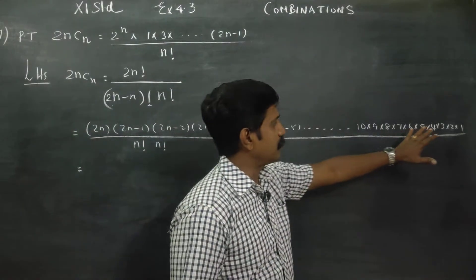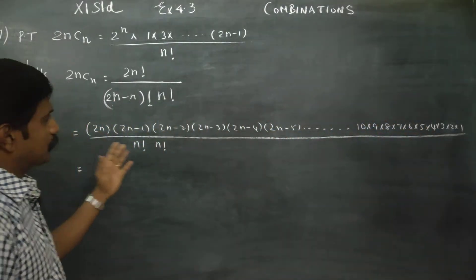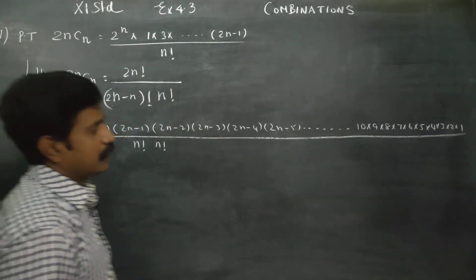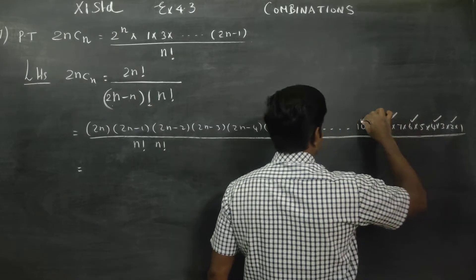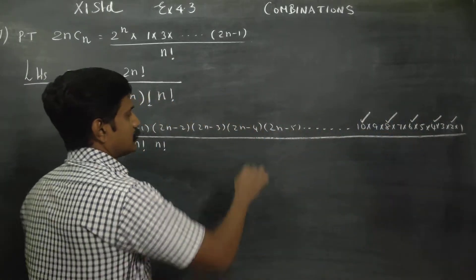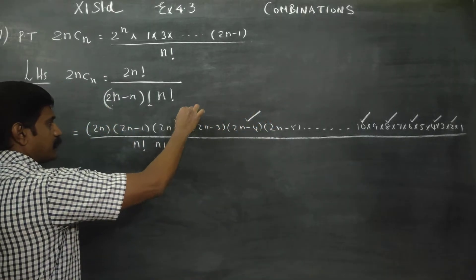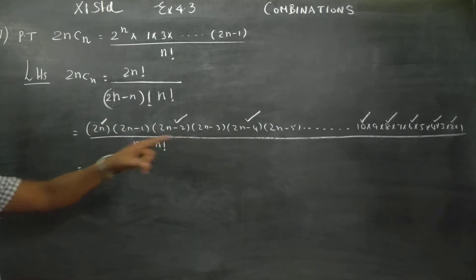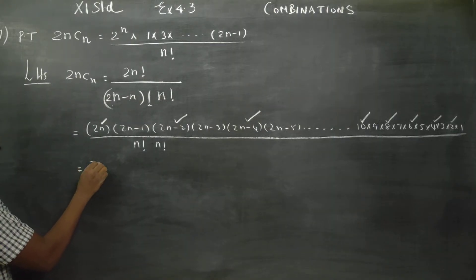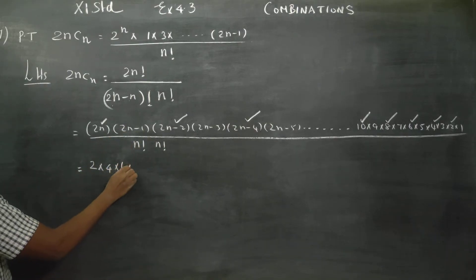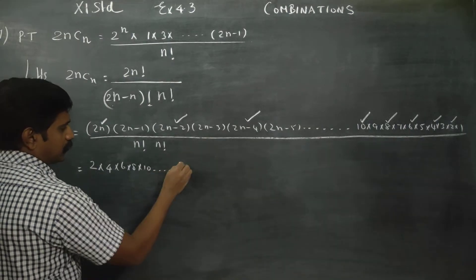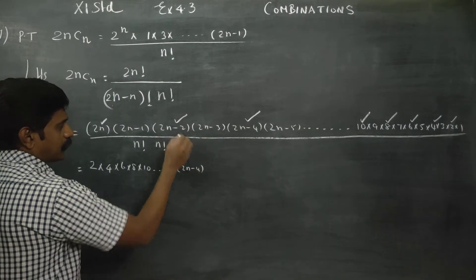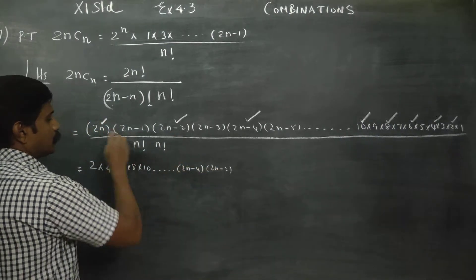If we look at the numerator, the even numbers are: 2, 4, 6, 8, 10, dot dot dot, 2n minus 4, 2n minus 2, 2n. These are my even number terms.